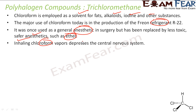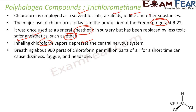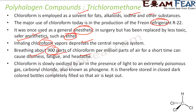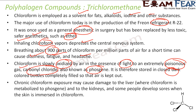If you inhale chloroform, it will depress your central nervous system. Breathing even 900 parts per million can cause dizziness, fatigue, and headache. Chloroform is slowly oxidized by air in the presence of light, forming an extremely poisonous gas called carbonyl chloride, also called phosgene. Therefore, it is stored in the dark. Chronic chloroform exposure can cause damage to the liver, kidneys, and skin.